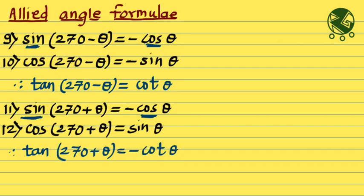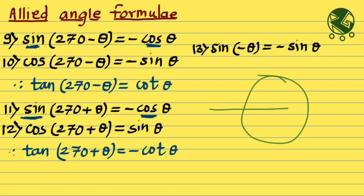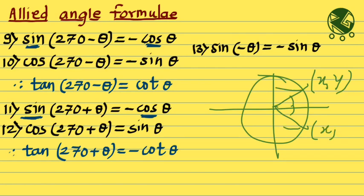Cos of 270 plus theta is plus sine theta. Tan of 270 plus theta is minus cot theta. For sine of minus theta: if angle theta has coordinates (x, y), then minus theta has the same x-coordinate but the y-coordinate becomes minus y. So sine of minus theta is minus sine theta, but cos of minus theta equals cos theta.